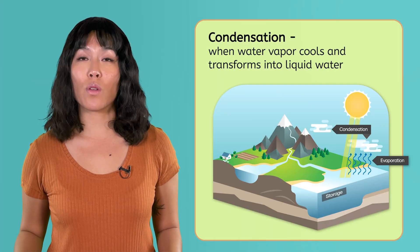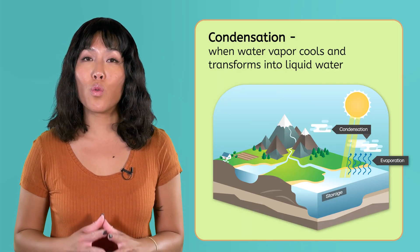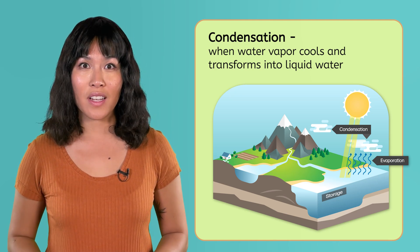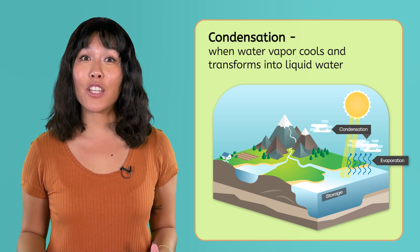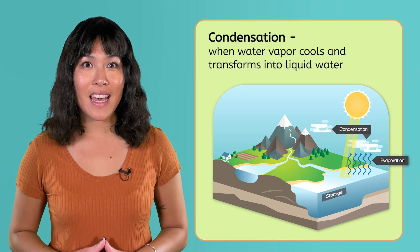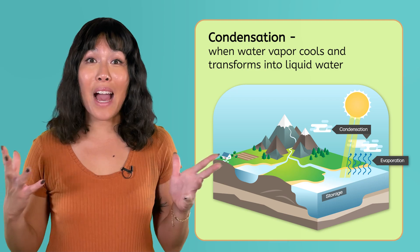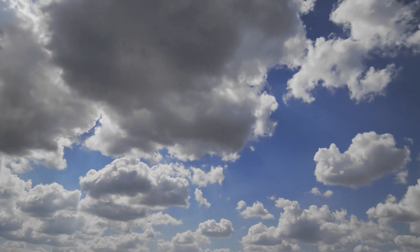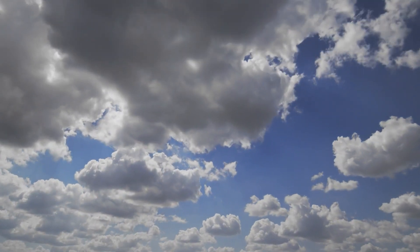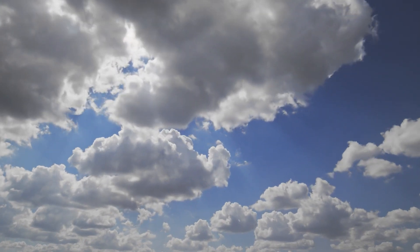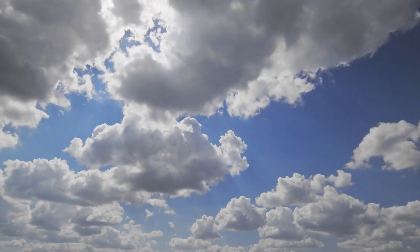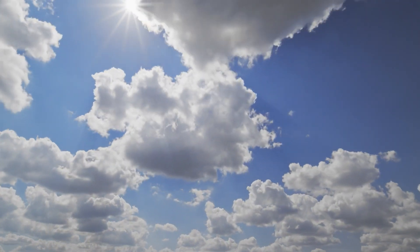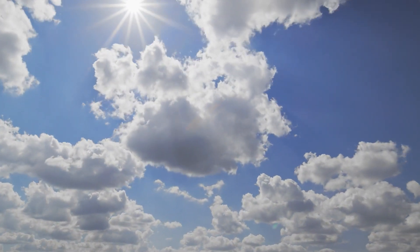Condensation is when water vapor cools and transforms into liquid water. As these tiny droplets of water vapor condense, they form the clouds in the sky. But eventually, a cloud can become completely saturated with water until it cannot hold anymore. What do you think happens then?